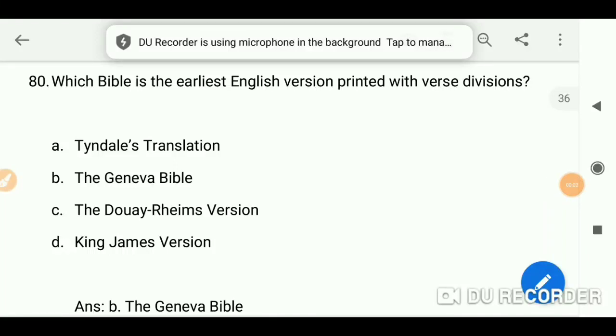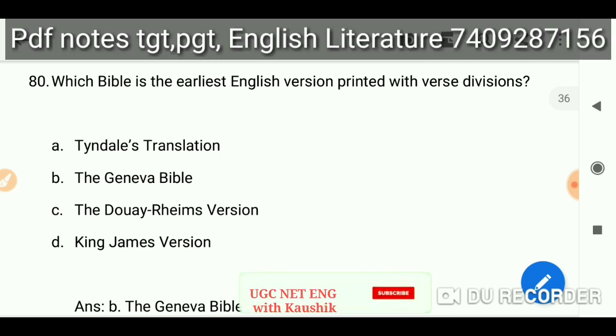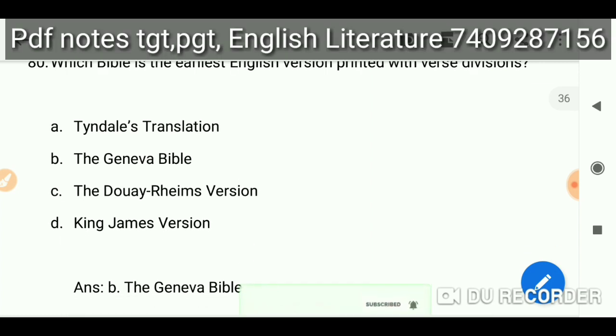Which Bible is the earliest English version printed with verse division? The Geneva Bible.